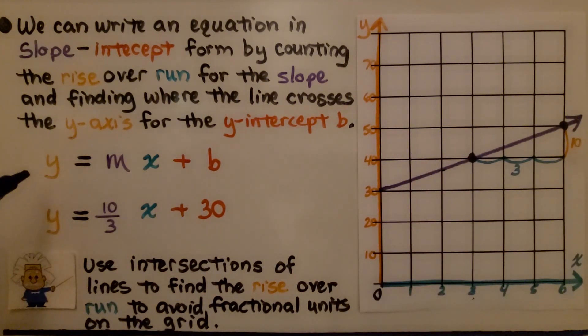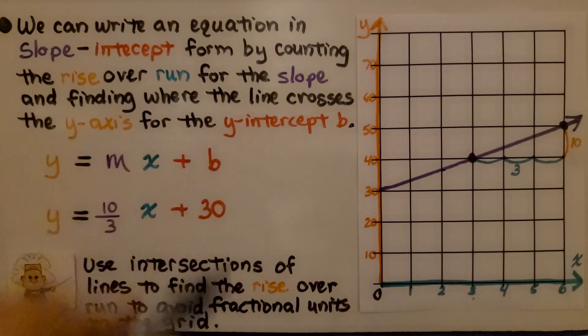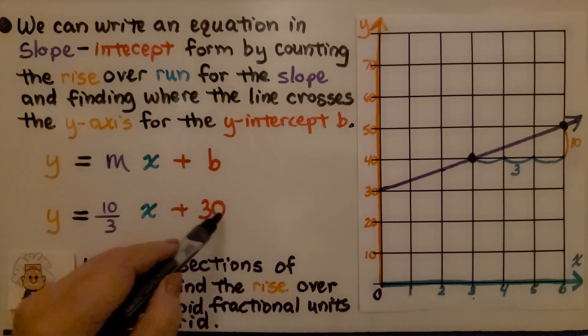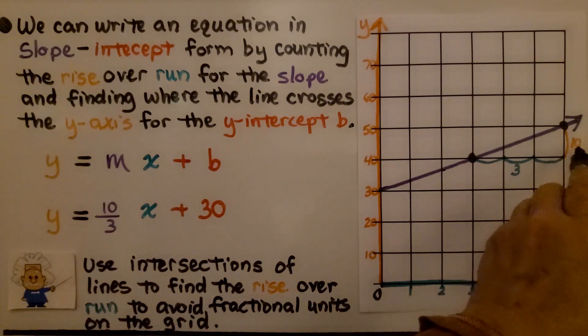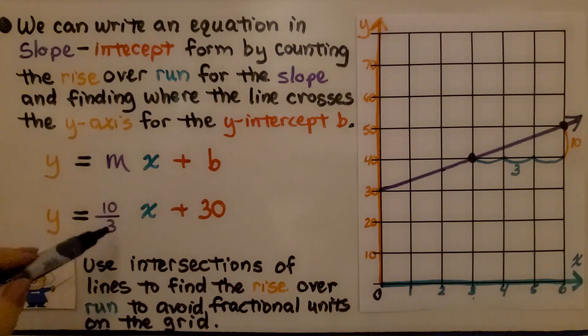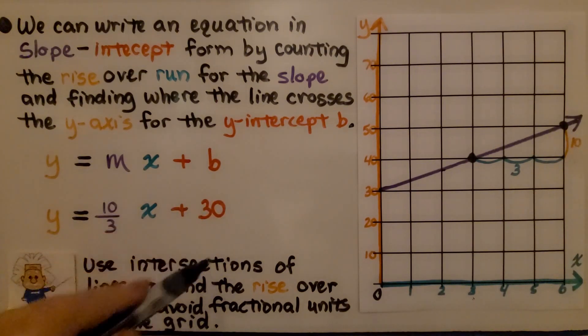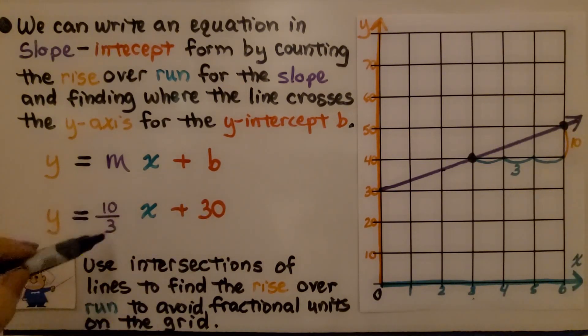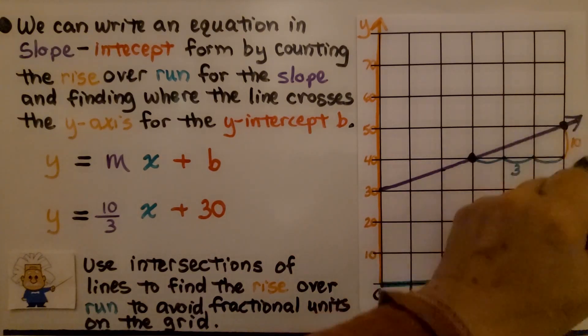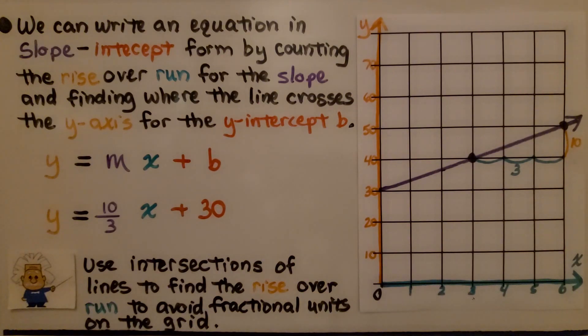Our slope-intercept equation is y equals mx plus b. We know that the y-intercept is 30, so that's plus 30. We know the rise is 10 and the run is 3. We have y equals ten-thirds x plus 30. And we could even change this and simplify this to three and a third. So we could use the slope formula to find the slope and write down the points for x and y, or we could just count the rise and the run for the slope.